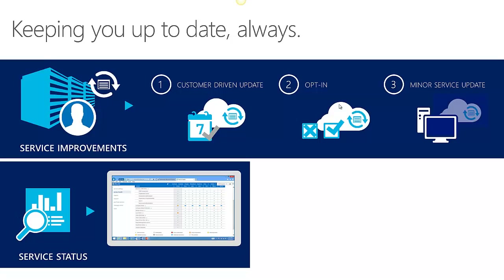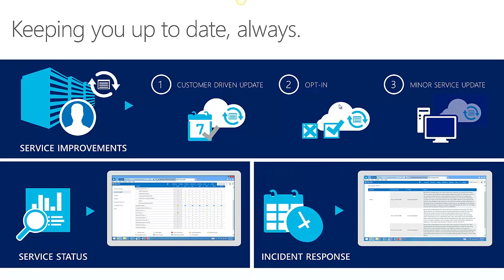If there's any service disruption, our service status panel within the Office 365 Admin Center will show you when that service was disrupted or when there is a planned upgrade. And if there's any incident, we have full disclosure on incident responses, giving you all the details. So we are 100% transparent and always keeping you up to date.